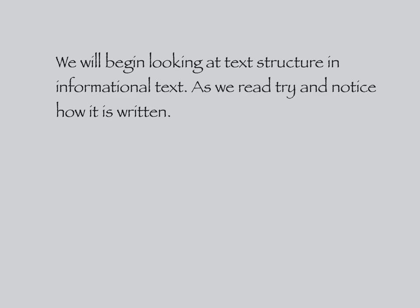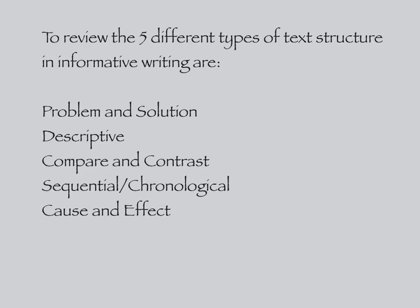We will begin looking at text structure in informational text. As we read, try and notice how it is written. To review, the five different types of text structure in informative writing are Problem and Solution, Descriptive, Compare and Contrast, Sequential and Chronological, and Cause and Effect.